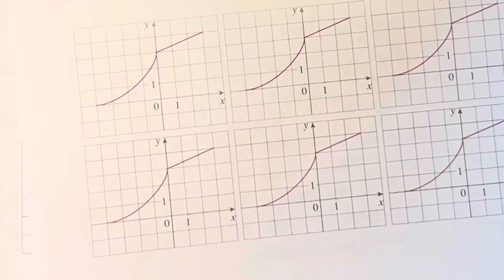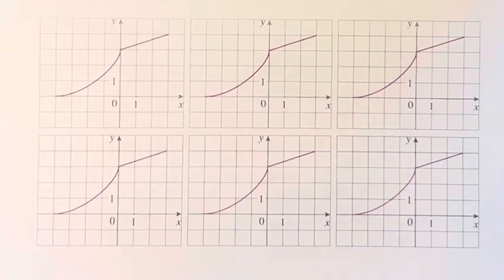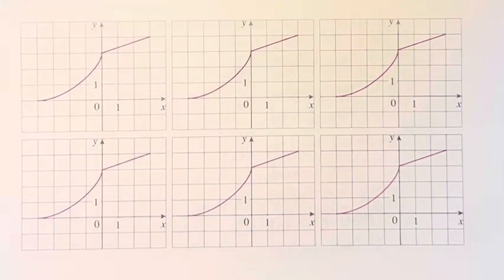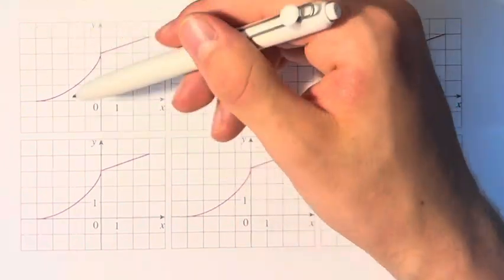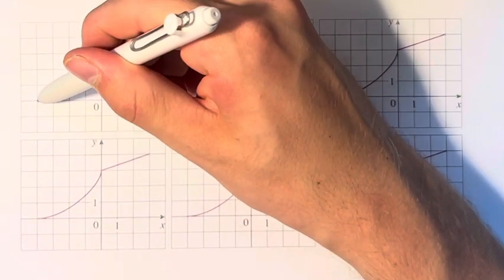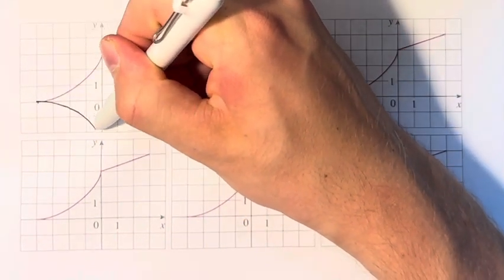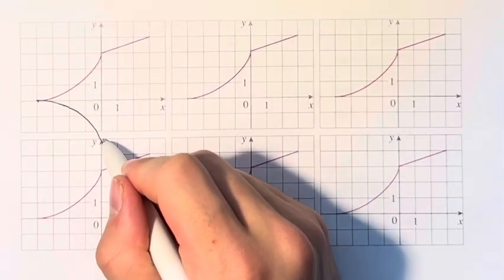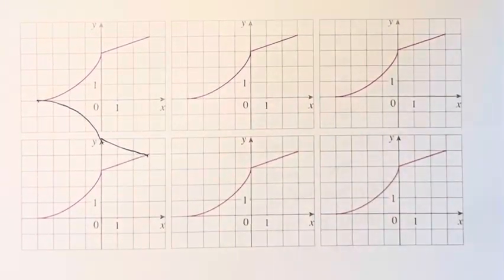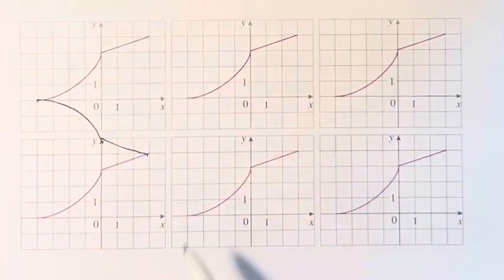For part B, we're asked to reflect over the x-axis. Again, we don't have the space for this. But we take the x-axis and create a mirror image of the function. Going into the next graph, it reflects like this.